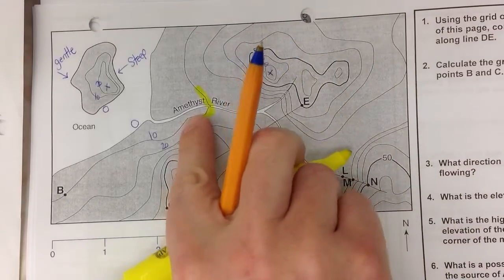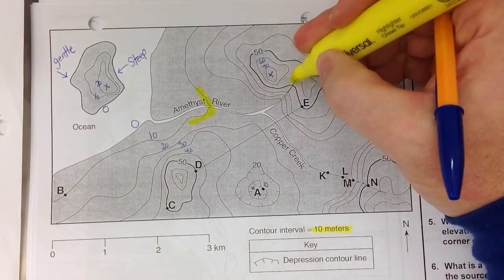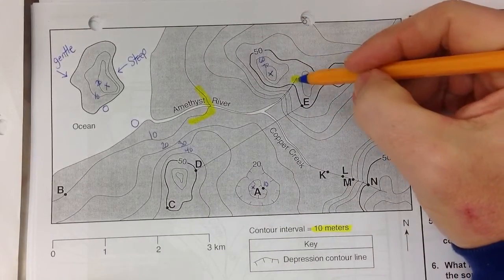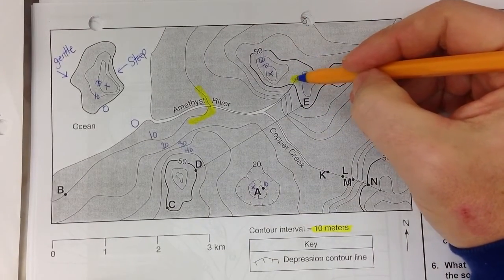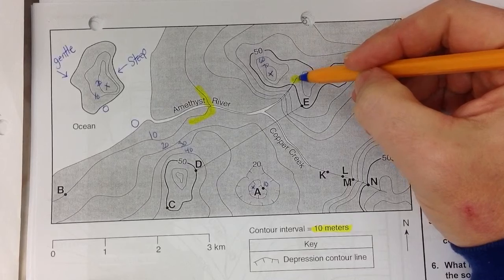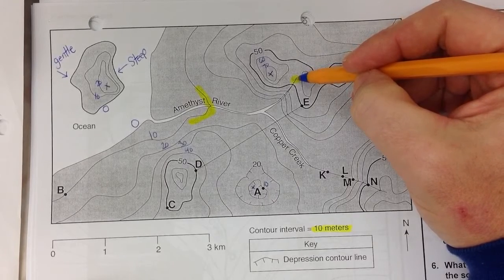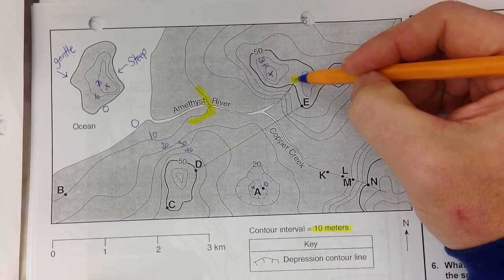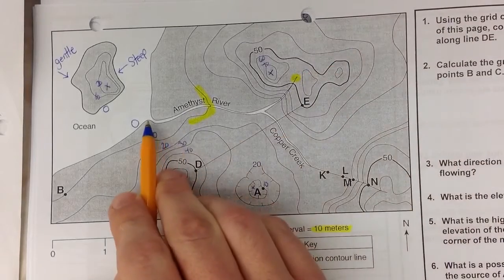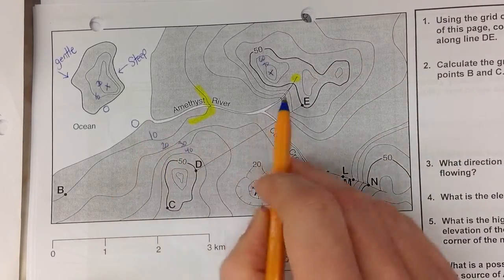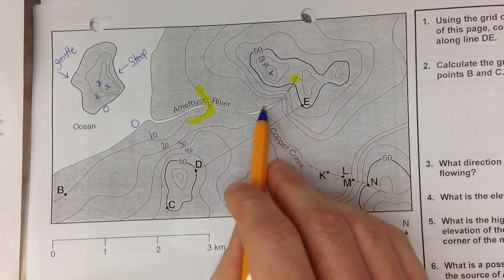So if I kind of backtrack the Amethyst River, right here is about where the source is going to be of the river. The source of the river is about 55 meters. So it's going to go from 55 meters down to 0 meters, which is right into the ocean. So I know that the river is going to be flowing downhill.